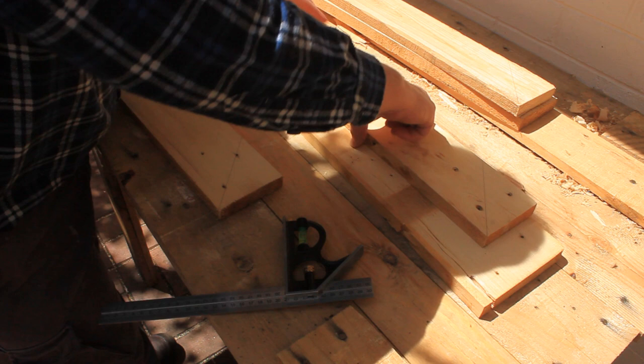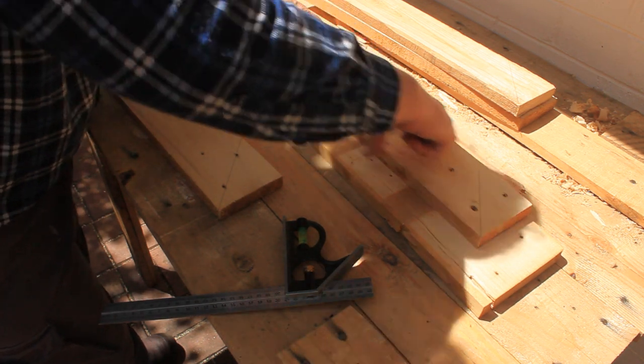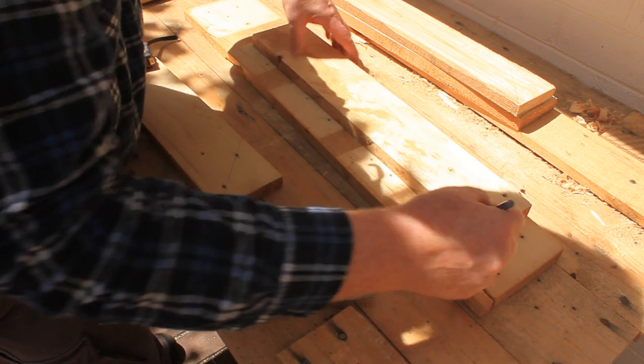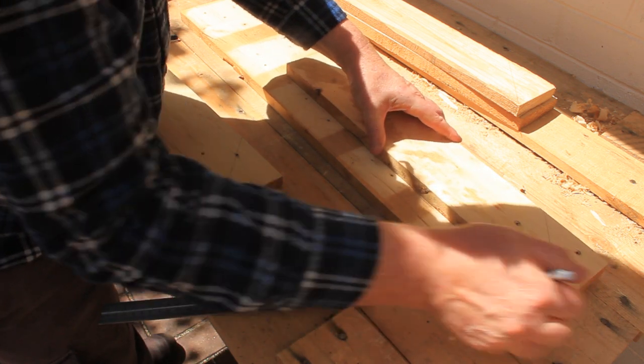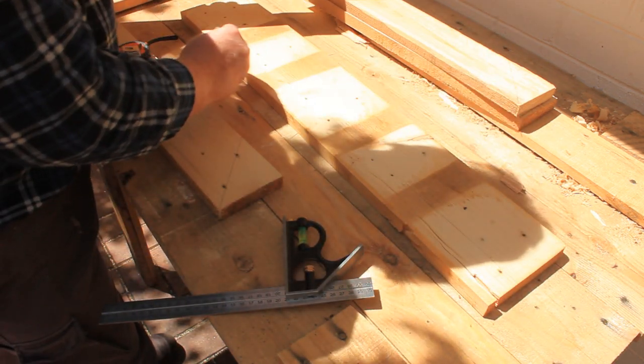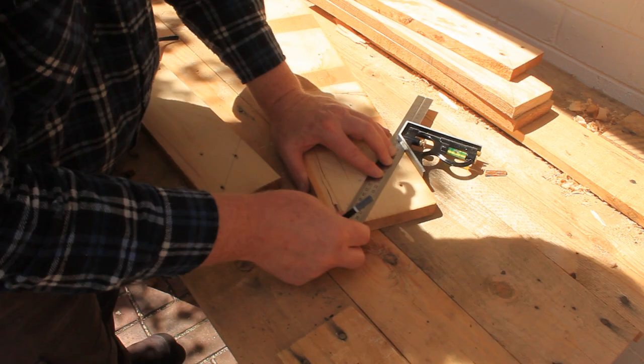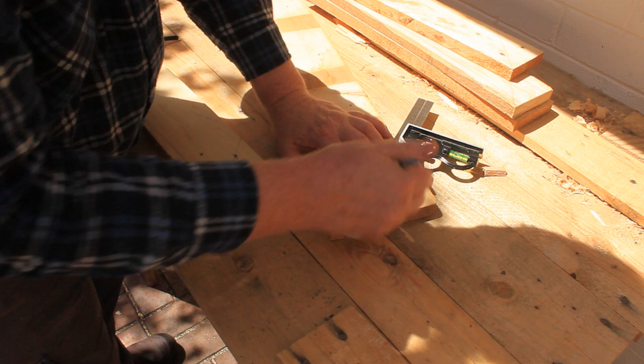Then use one of your narrow boards to mark the width we'll be cutting out. Mark the waste side with some pencil lines as usual. Now mark a 45 degree line at the end of the board.